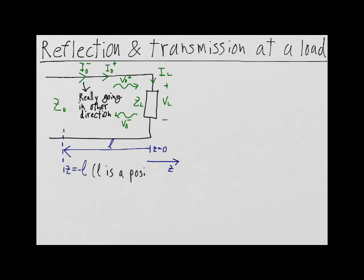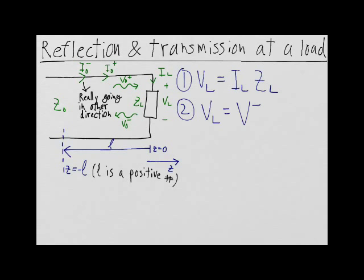We will also write several equations relating the current and the voltage at the load impedance. The first equation is that the voltage across the load VL is equal to the current through the load IL multiplied by ZL. The second equation is that VL is equal to the incident voltage V+, plus the reflected voltage V-.